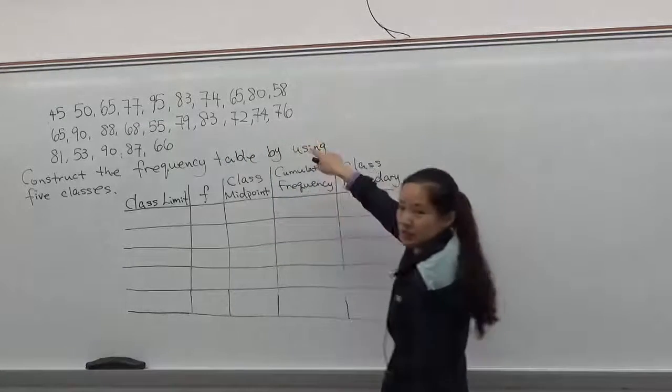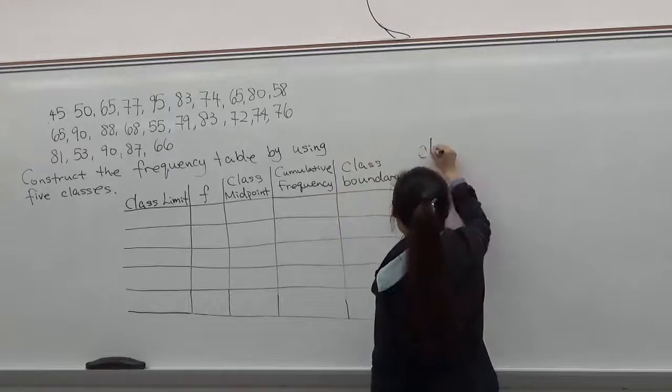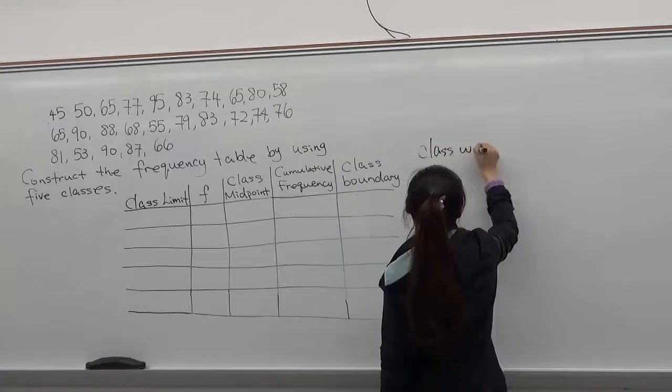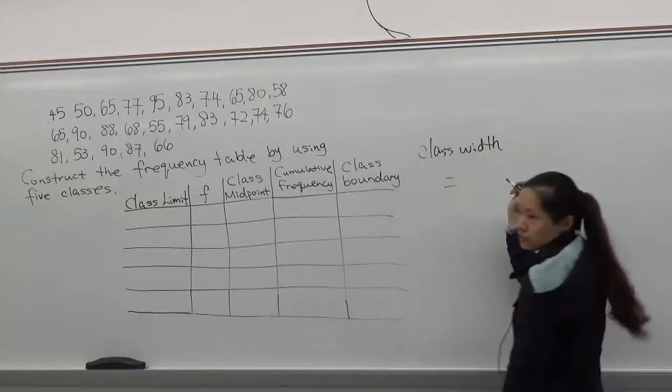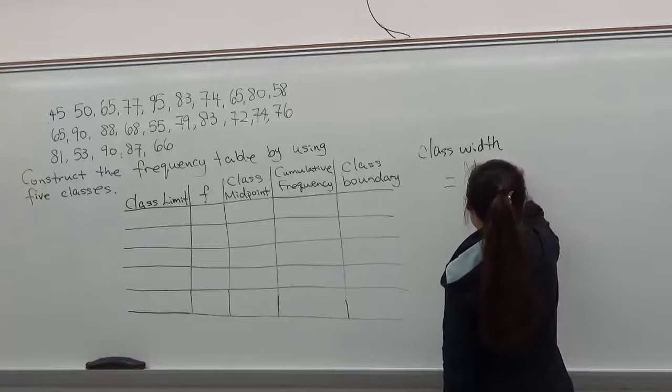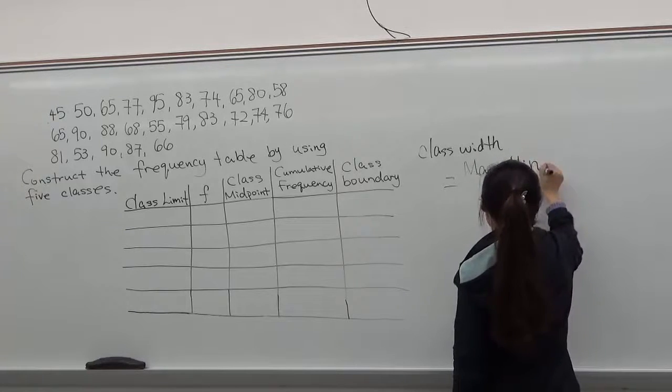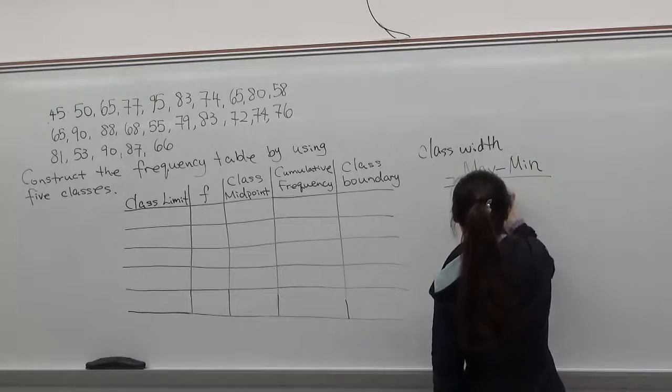In order to construct frequency distribution, we'll need to find the class width. And the formula for class width is the highest number minus the lowest number divided by number of classes.